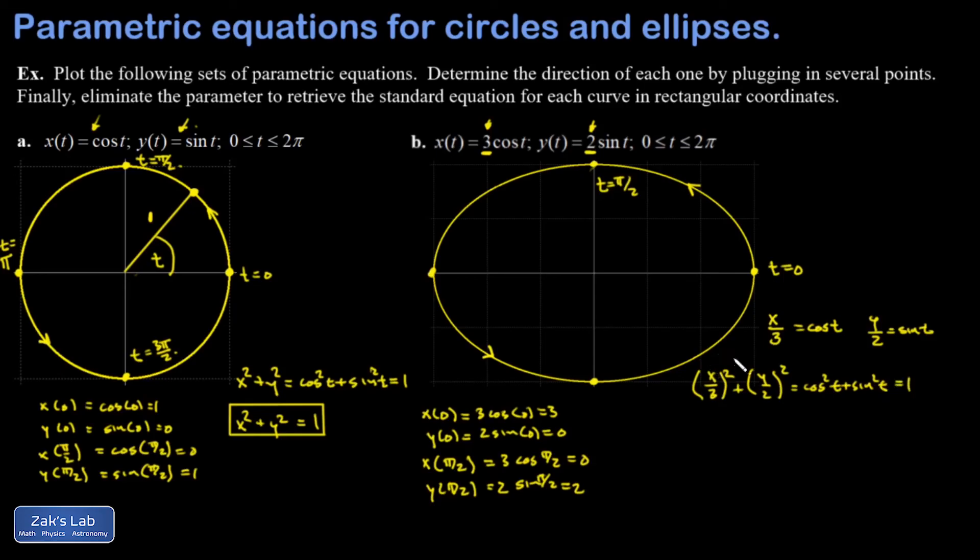Which is equal to 1. In other words, I guess I could write it like this: x squared over 9 plus y squared over 4 equals 1. Hopefully you recognize that as the equation of an ellipse with a semi-major axis of 3 and semi-minor axis of 2.